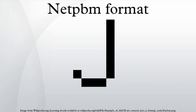This is in contrast to the other formats, where higher values signify brighter pixels. The P4 binary format of the same image represents each pixel with a single bit, packing 8 pixels per byte, with the first pixel as the most significant bit. Extra bits are added at the end of each row to fill a whole byte.